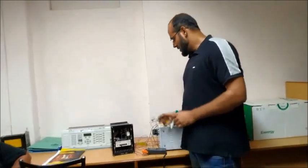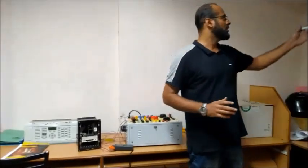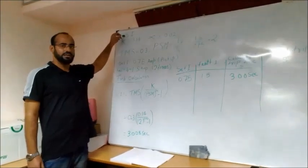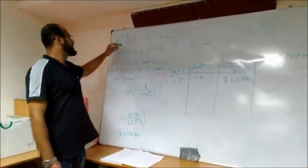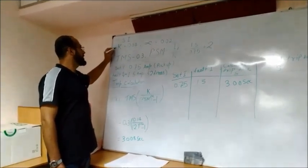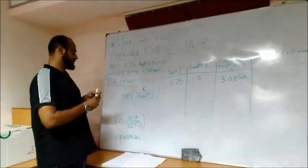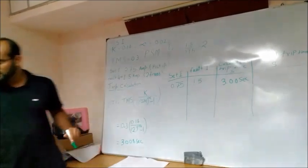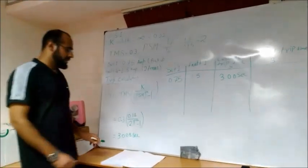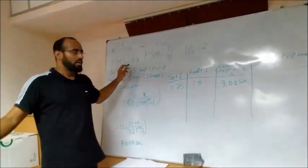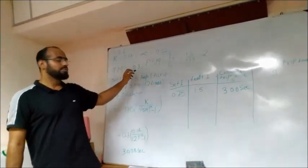So first we should know the theory part of how it works. So here we go. So basically this relay is our standard inverse relay. We need two values, that is our constant value, that is K and that is alpha. So we should set first the TMS. The TMS value that is we already set in our breaker 0.3.